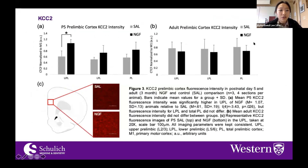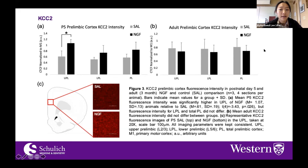I also had a chance to look at KCC2. KCC2 has a fluorescent signal distribution pattern that is quite difficult to quantify in terms of density of cells expressing it, so I stuck with the intensity output. The analysis shows a significant difference in KCC2 intensity across experimental and control groups, specifically in the upper prelimbic cortex. To my knowledge, there are no studies that look at KCC2 levels in the early postnatal weeks — most only look at it in adults. Interestingly, we didn't find any differences in KCC2 intensity as adults.